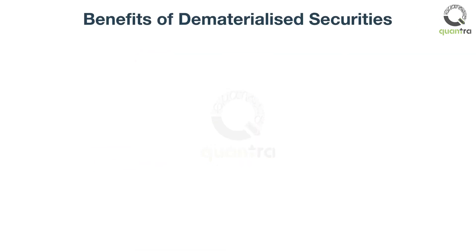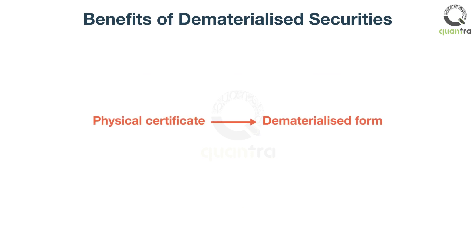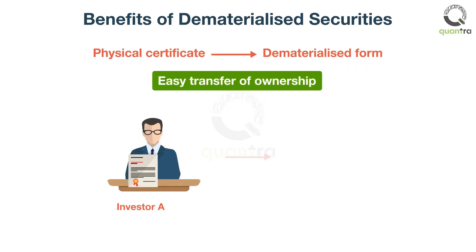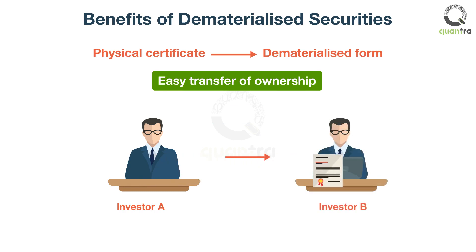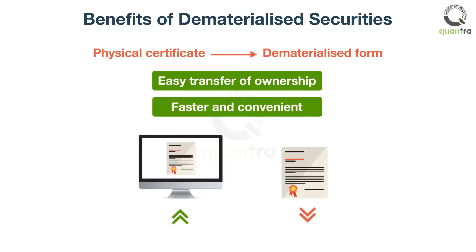Traditionally, CSDs are used to hold securities in physical certificates. The modern approach is to dematerialize them and store securities in uncertificated form. Some of the benefits of this modern approach are: ownership can be easily transferred through bookkeeping rather than the transfer of physical certificates. It is much faster and easier than the traditional method, where physical certificates had to be exchanged after trades had been completed.